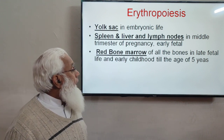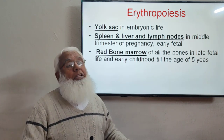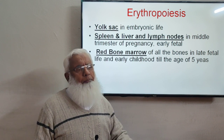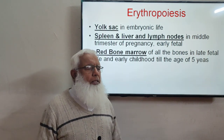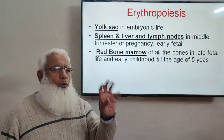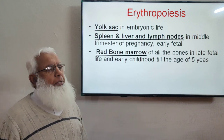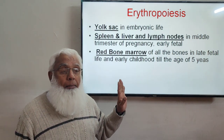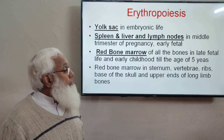From fetal life and early childhood until about age five, red bone marrow is present in all marrow cavities of all bones — long bones and small bones alike. After birth, the shafts of long bones become filled with yellow bone marrow. Red bone marrow then exists only at the ends of long bones, and in vertebrae, ribs, and the sternum.